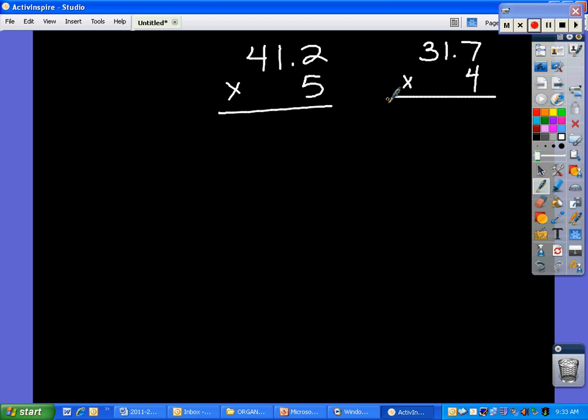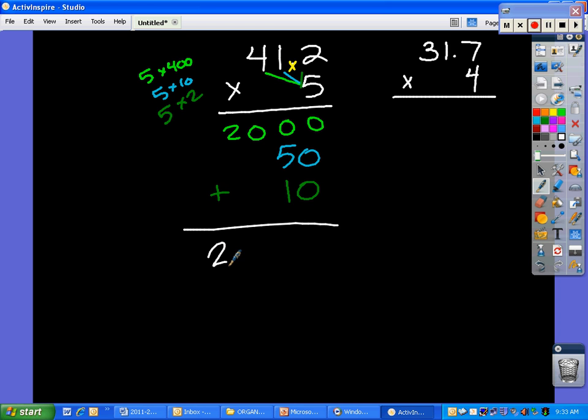A couple more that we're going to take a look at. I'd like you to do this one with me now. So first we have 5 times 400, so we get 2,000. Next we have 5 times 10, which is 50. Last we have 5 times 2. 5 times 2 is going to be tenths, right? And we'll just add these up. We get 2, 0, 6, 0.